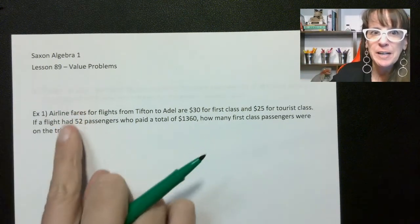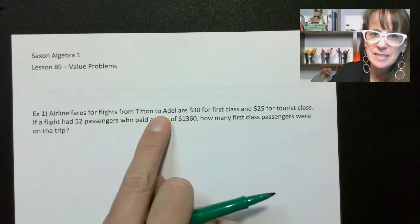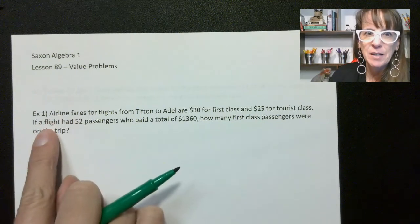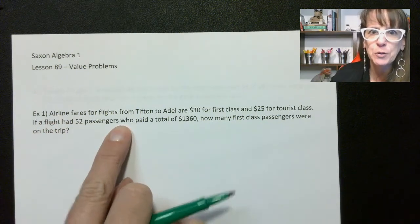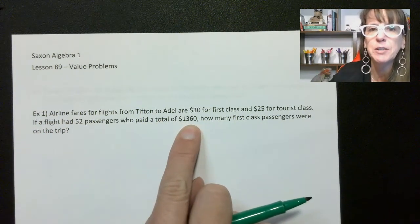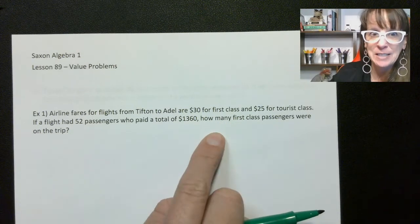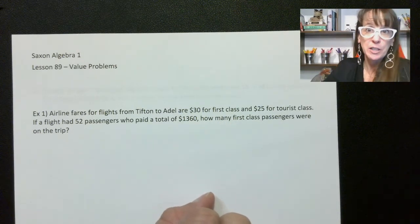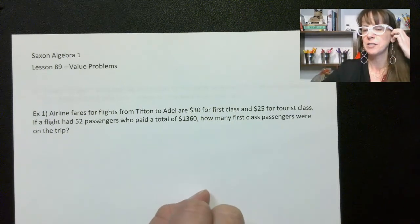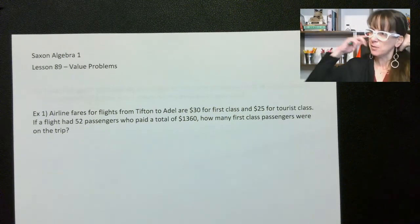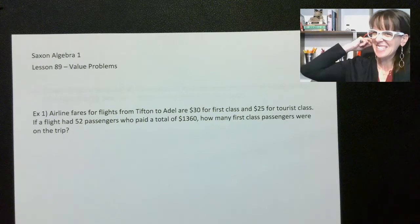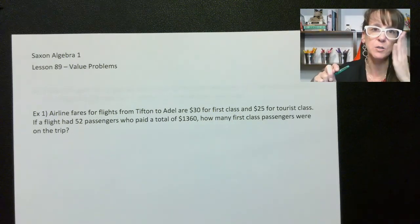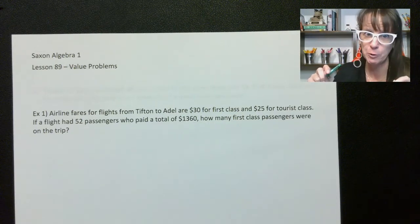So for our first one: airline fares for flights from Tifton to Adele are $30 for first class and $25 for tourist class. If a flight had 52 passengers who paid a total of $1,360, how many first class passengers were on the trip? This is called a system of equations because we're going to use two variables to solve it. The SATs has a ton of system of equation problems, so being able to do these word problems is going to be very helpful for you.